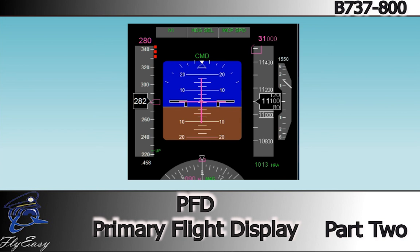Notice the autopilot is engaged. The airspeed is at the selected command speed and the speed is far above the flaps up speed. The MCP altitude is set to capture at flight level 310. The current vertical speed is 1,550 feet per minute and the aircraft is climbing through 11,100 feet.